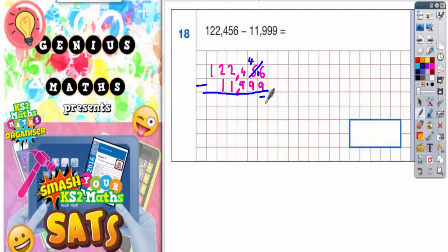4 takeaway 9 we can't do so we need to borrow from this 4 and that becomes a 3. And the one we borrowed makes this 4 here into 14. 14 takeaway 9 is 5.